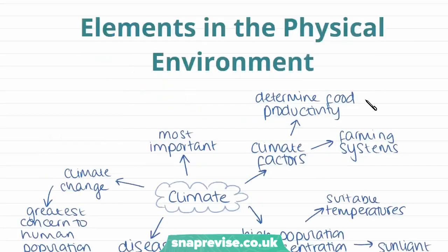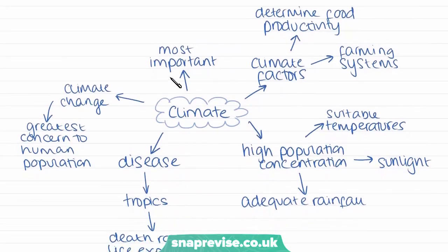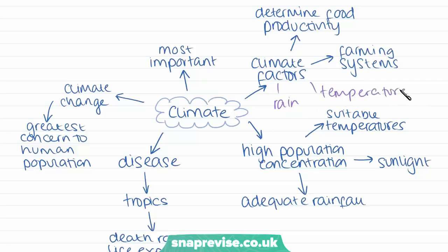Now we're going to look at some of the elements in the physical environment more specifically. The first is climate, which is the most important physical factor influencing the environment and human populations. Climate factors such as rainfall, temperature, and sunlight levels determine things like food productivity — how much food can be cultivated on the land — and different farming systems. For example, many crops need temperatures of at least five degrees Celsius to grow.